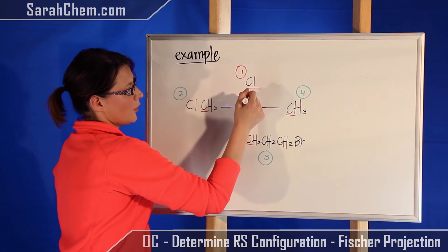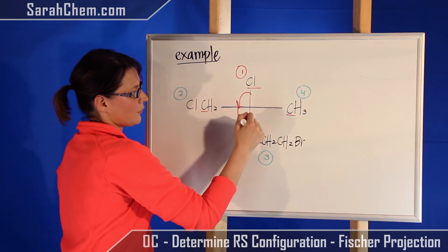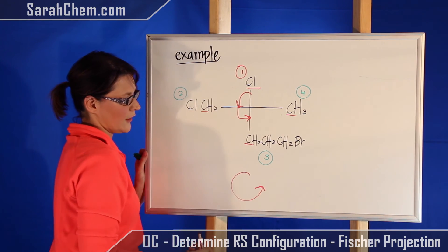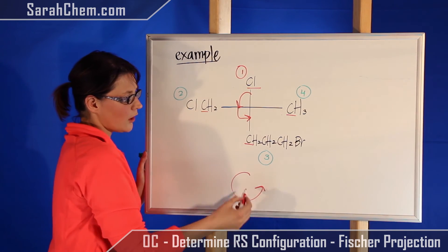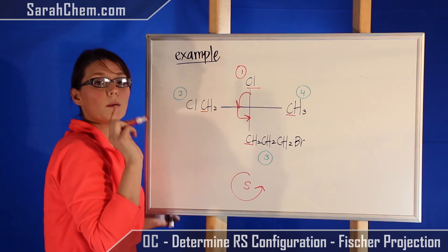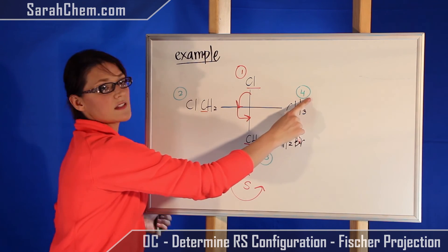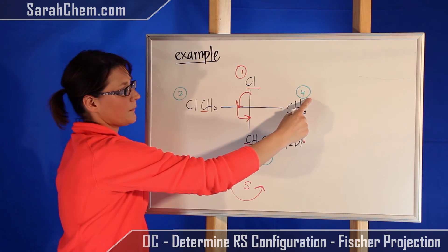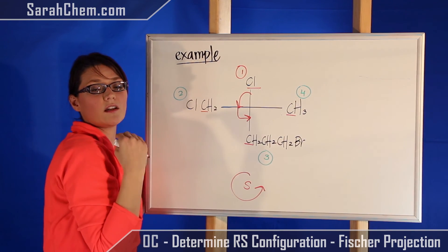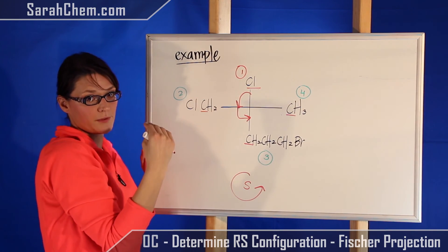So now we're going to draw our arrow going from one to two and two to three. So we're moving in this direction here. So this here is counterclockwise, which is usually S, but remember you need to look and see where is my fourth group located. So this fourth group is located on a horribly bad horizontal position.